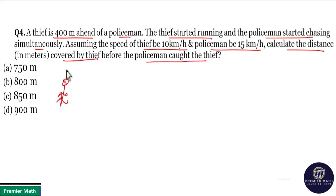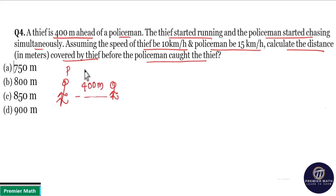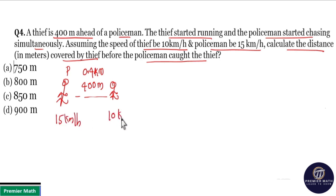Here, this is the policeman and this is the thief. The distance between them is 400 meters, that is 0.4 km, since 1 km equals 1000 meters. The speed of the police is 15 km per hour and the speed of the thief is 10 km per hour.